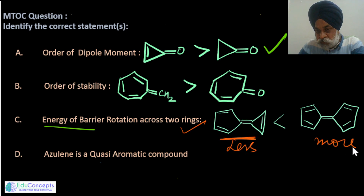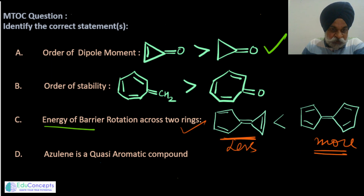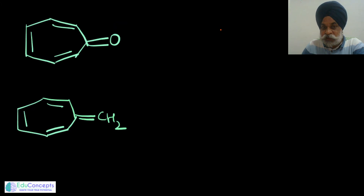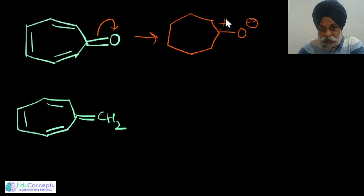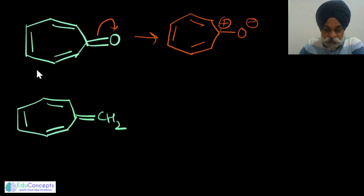For the other compound, because polarization is favored — resulting in an aromatic pi system — it would rather maintain its pi bond character in the fused rings. Therefore the pi bond would always be present there and the energy of rotation would not be low. The options state that energy of barrier rotation is less for the first compound and more for the second — this is correct. Moving to option B on stability order.